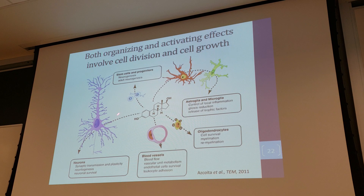This slide summarizes it: estradiol has many effects — organizing early on in development, but then also activating later as seasons change, resulting in extra output of neurons or more connections made between neurons.